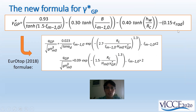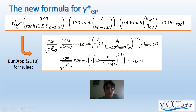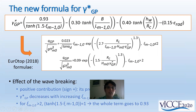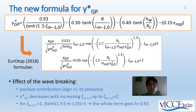The result is the formula we named gamma star GP. The main difference of genetic programming with respect to neural networks is that genetic programming develops a formula — not a black box — including elements we can see, check, and possibly correct. The gamma star GP coefficient is to be included in the EurOtop 2018 formula.